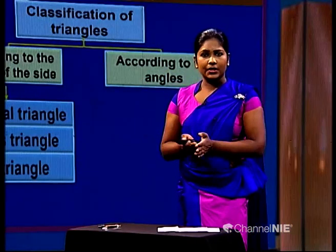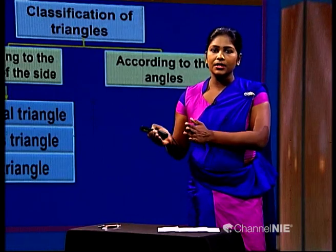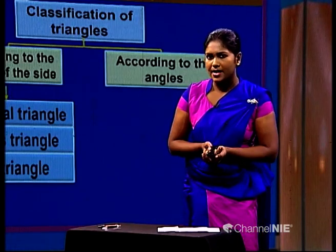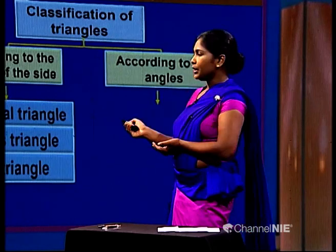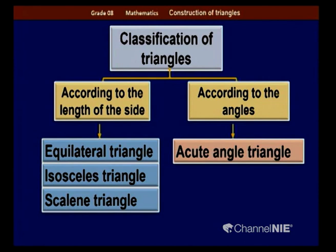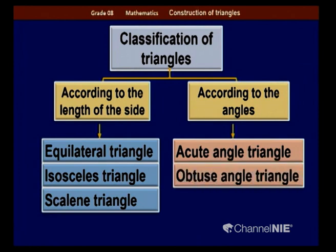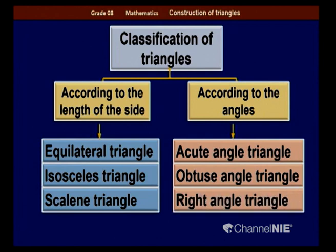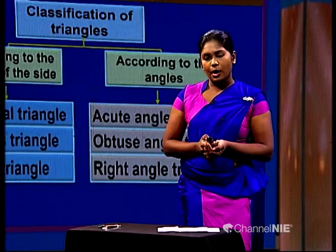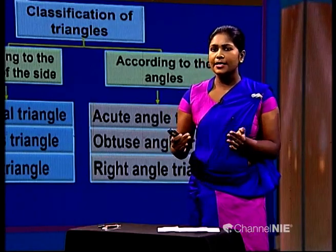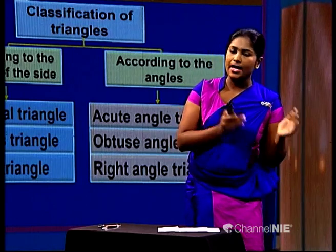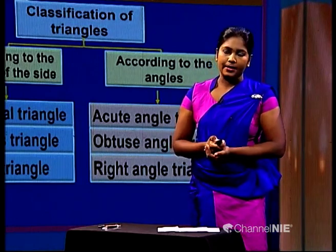According to their angles, triangles are classified as: acute angle triangles, where all angles are acute; obtuse angle triangles, which have an obtuse angle; and right angle triangles, which have a right angle. Now you know how to classify triangles according to both their sides and their angles.